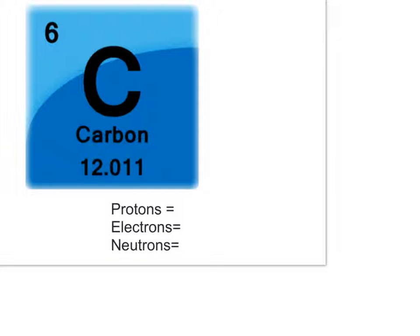Let's practice this with carbon. If we want to know how many protons there are in this atom, we need to look at the atomic number. So there are 6 protons in carbon. We know that carbon is neutral, so there are also 6 electrons in carbon.